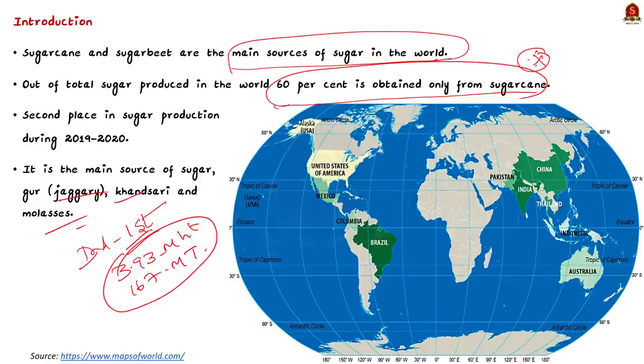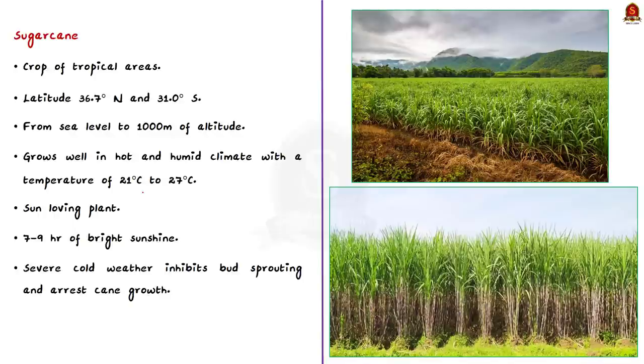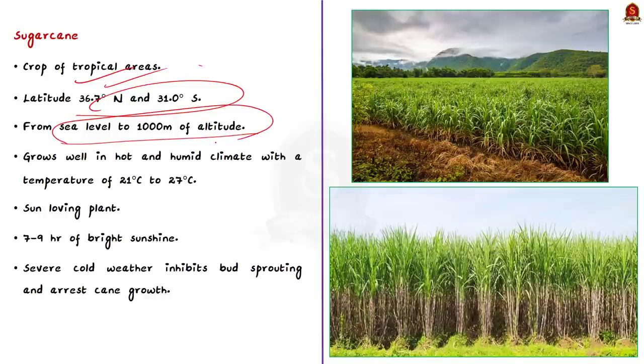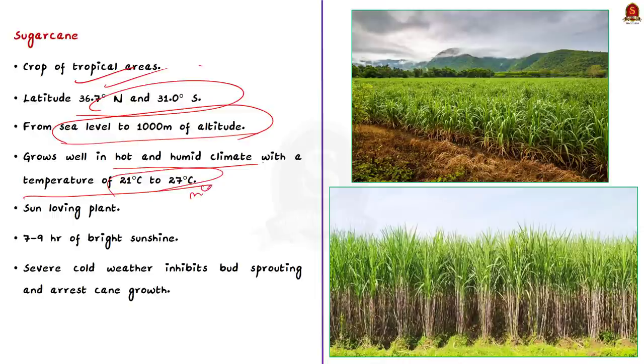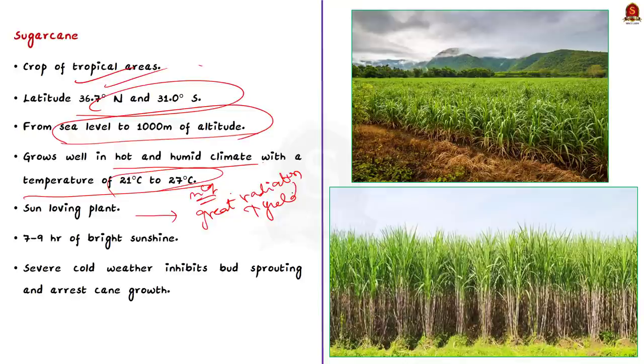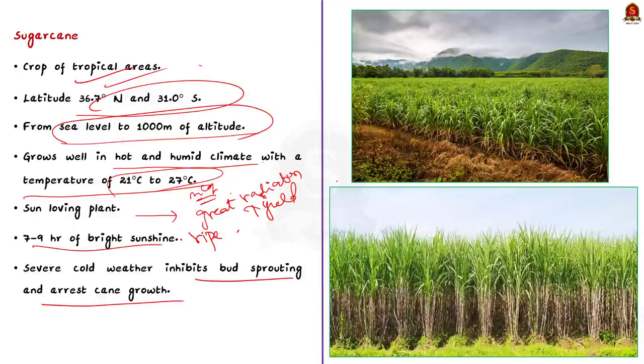See friends, sugarcane is a crop of tropical areas and it is grown in the world from altitude 36.7 degree north and 31.0 degree south. It is grown from sea level up to 1000 meters of altitude. See sugarcane grows well in hot and humid climate with a temperature of 21 degree celsius to 27 degree celsius. Know that sugarcane is a sun loving plant which means greater incident radiation favors higher sugar yields. About 7 to 9 hours of bright sunshine is highly useful for both active growth and ripening of sugarcane. Severe cold weather inhibits bud development and it can arrest the sugarcane growth.